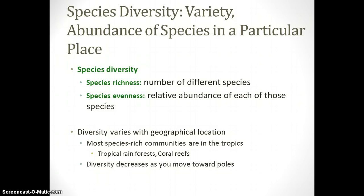Diversity varies with geographical location. The most species-rich communities tend to be in the tropics, like rainforests and coral reefs, located near the equator. Diversity decreases as you move toward the poles — areas like Patagonia, southern South Africa, or the Arctic tundra have less species diversity, which also makes them much more fragile ecosystems, since recovery from disturbances is very difficult.